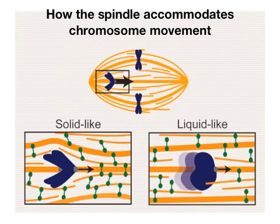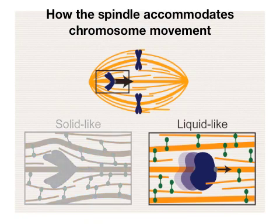For example, our data tells us how the spindle accommodates chromosome movement without breaking. It turns out that the velocity at which a chromosome typically moves from one end of the structure to its middle matches the timescale on which the spindle is most liquid-like. On this timescale, the spindle's dense microtubular network remodels efficiently, in a way that deformations have a minimal effect on the overall integrity of the structure.